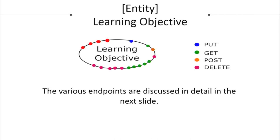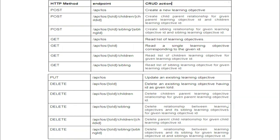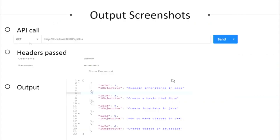There are a total of 18 endpoints associated with the Learning Objective entity. We used best practices to design the APIs — the API should be designed in the form of /api/ followed by the name of the entity. Here the entity is 'los', which is the abbreviated form of learning objectives. Actions are defined by HTTP methods such as POST, PUT, GET, and DELETE. The first API posts a learning objective to the database, where it is passed as a JSON body and stored in MySQL tables.